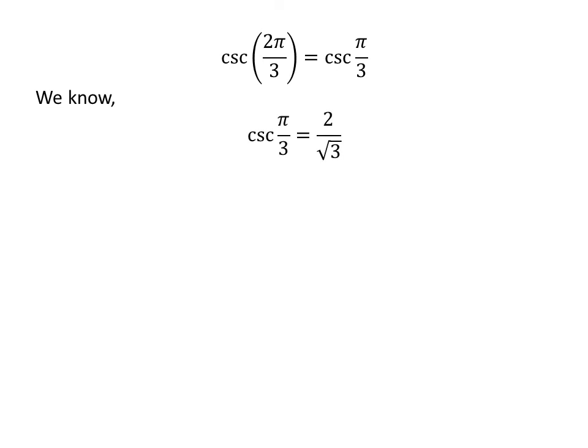We know cosecant of pi upon 3 is equal to 2 upon square root of 3. So cosecant of 2 times pi upon 3 is equal to 2 upon square root of 3.